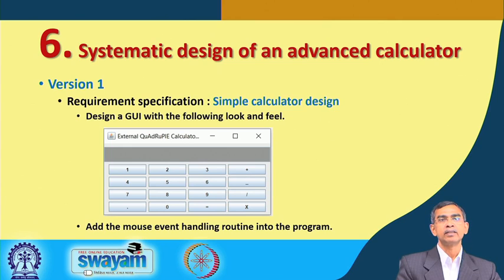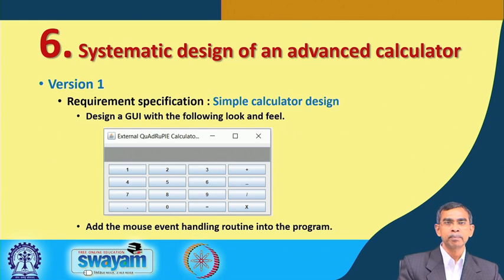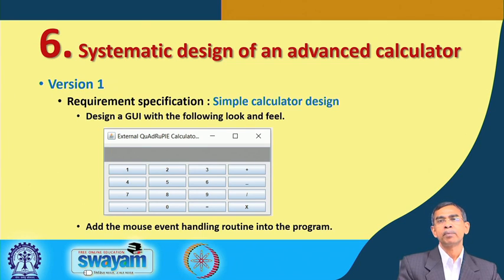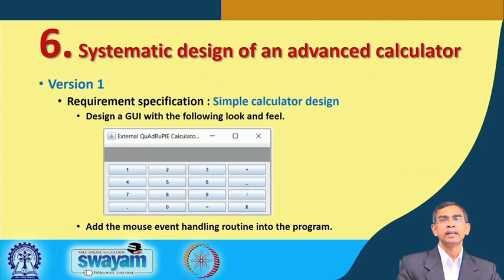In the first version, as you are familiar with this kind of project, we have developed it using an applet. You can also do it using a simple non-applet program using Swing or AWT. Both the applet version and the non-applet version program can be written. This is very simple — a few buttons and one text field area will be there, and user operations are binary operations. So you just create the layout, include certain components into that layout, and finally add listener methods so that events can be handled.